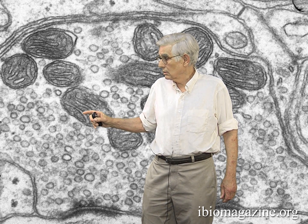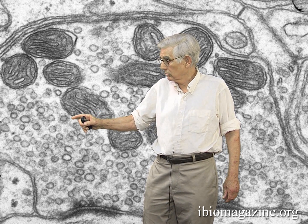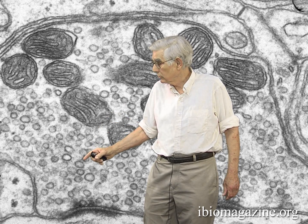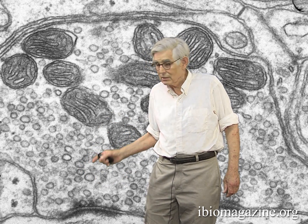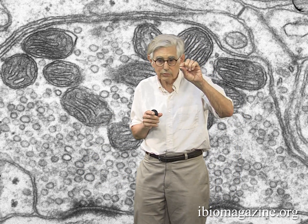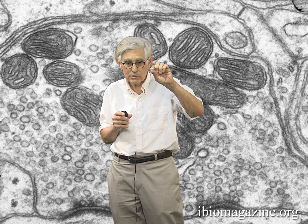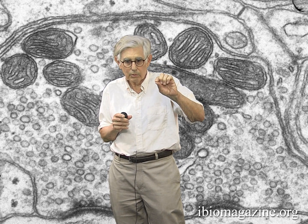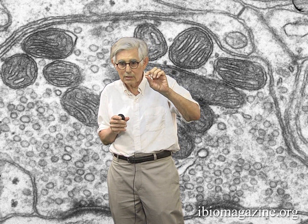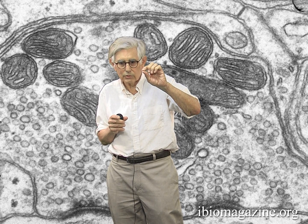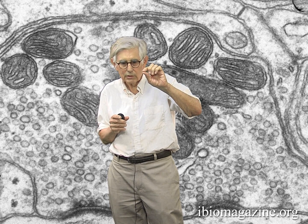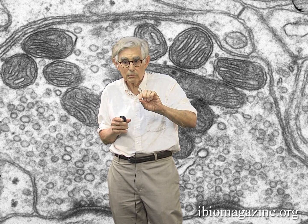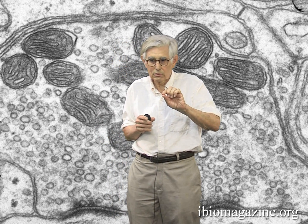Inside the synapse you can see these little circles — those are synaptic vesicles — and then you see those dense areas down at the bottom. That's a place where the one nerve cell, the presynaptic nerve cell, contacts the other nerve cell, the postsynaptic nerve cell, and it's right there that the presynaptic nerve cell releases transmitter to send a signal to the postsynaptic nerve cell.